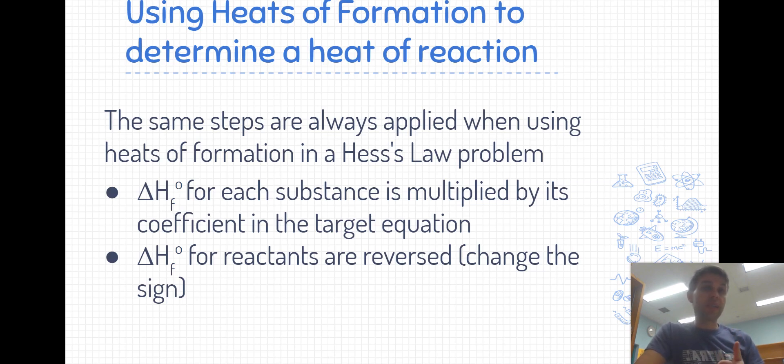The first thing that's always done is that the heat of formation for each substance is always multiplied by its coefficient in the target equation. The second thing that's always done is that the heat of formation for all of the reactants in the target equation need to be reversed, as in we have to change the sign of the heat of formation.